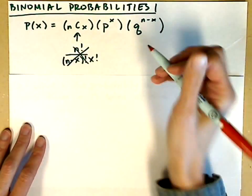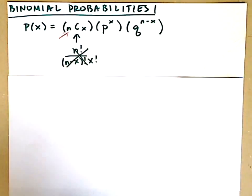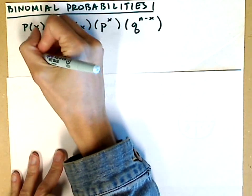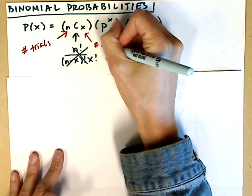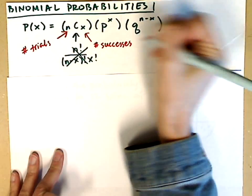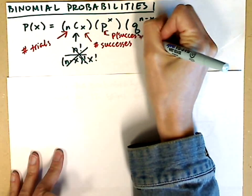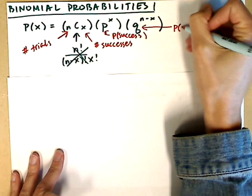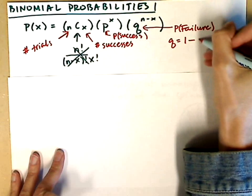Let's identify what our values are. The value n is the number of trials. X is going to be our number of successes. p is the probability of a success, and q is the probability of a failure, which can also be expressed as 1 minus p.